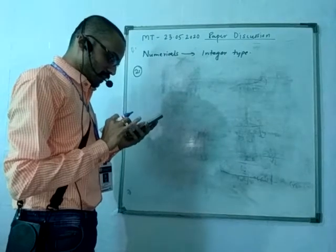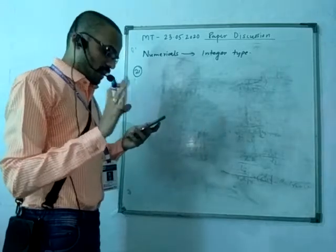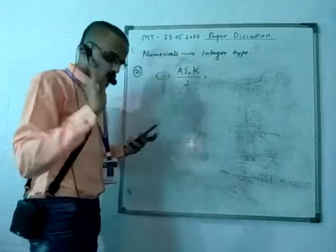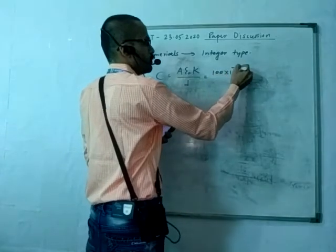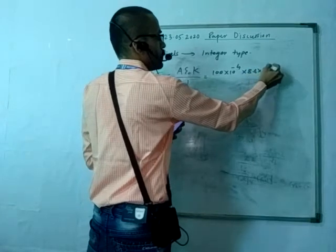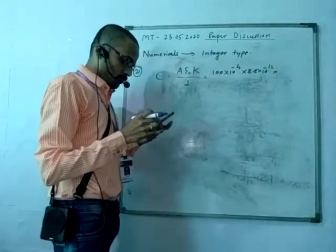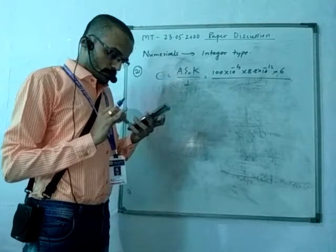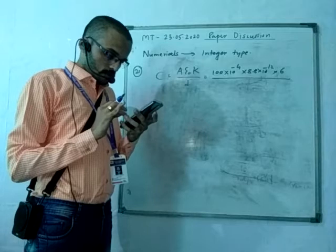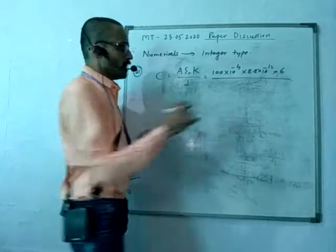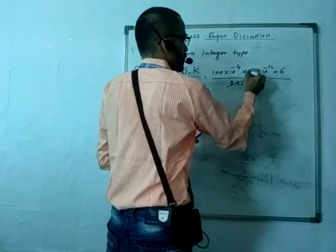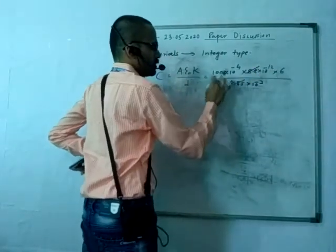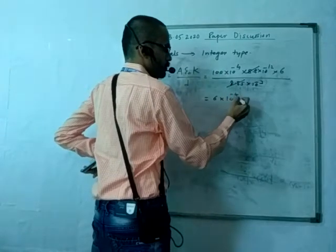You can directly use the formula C equals A epsilon naught K upon D. Area is 100 cm² which is 10⁻⁴, epsilon naught is 8.8 × 10⁻¹², K is 6, and D is 8.85 × 10⁻³. This gives us 6 × 10⁻¹¹ after calculation.